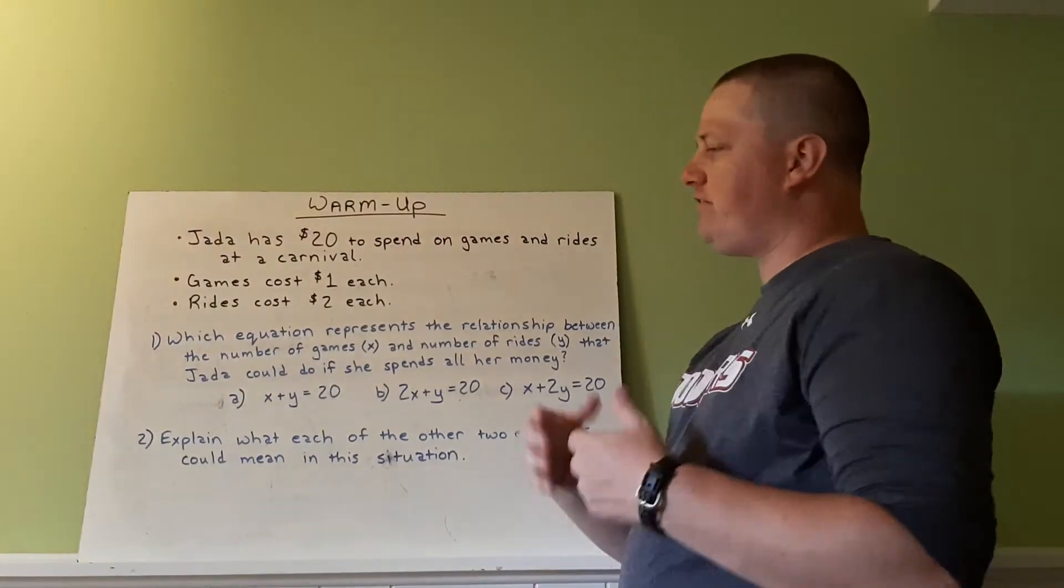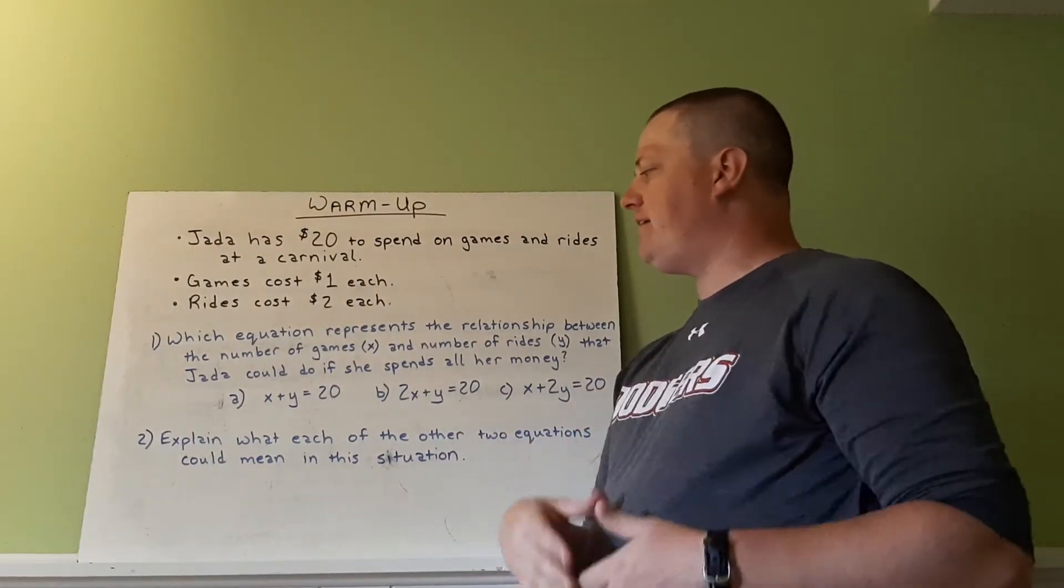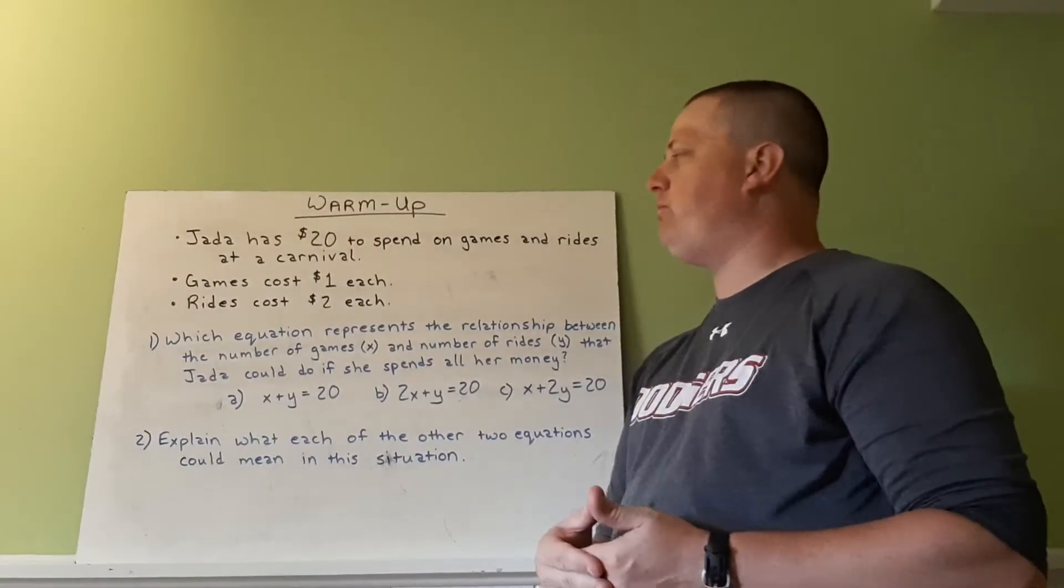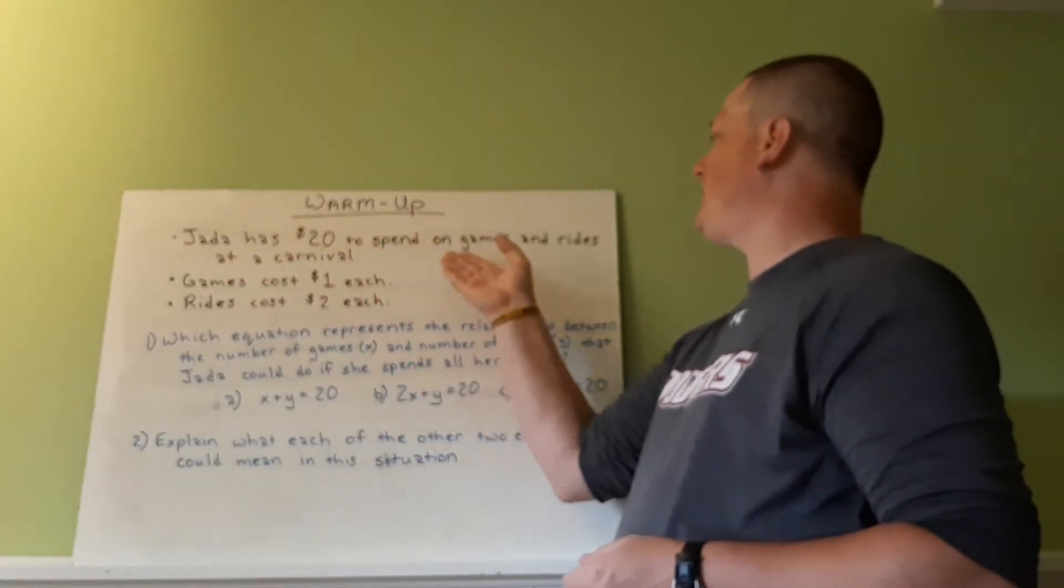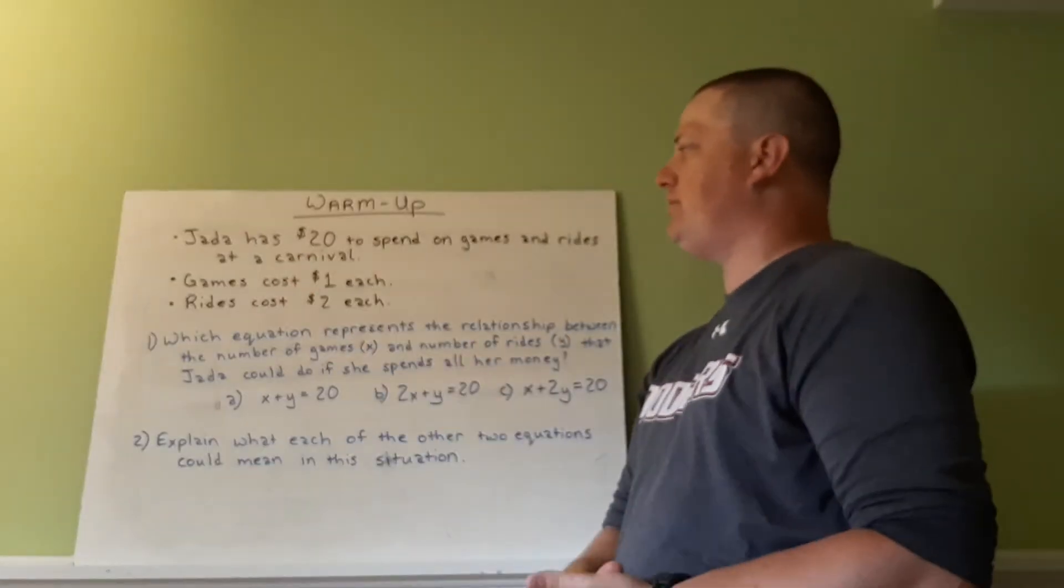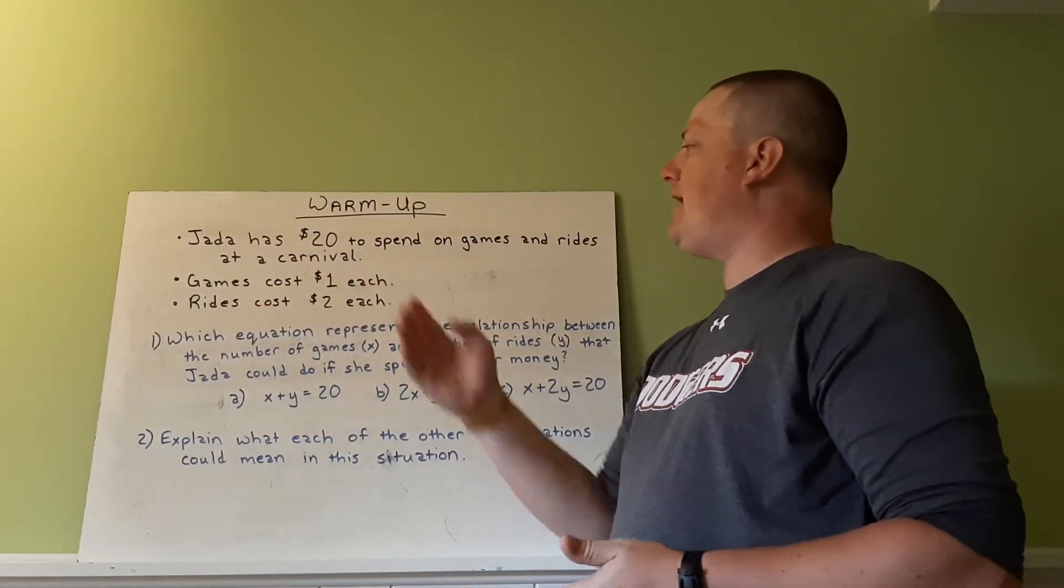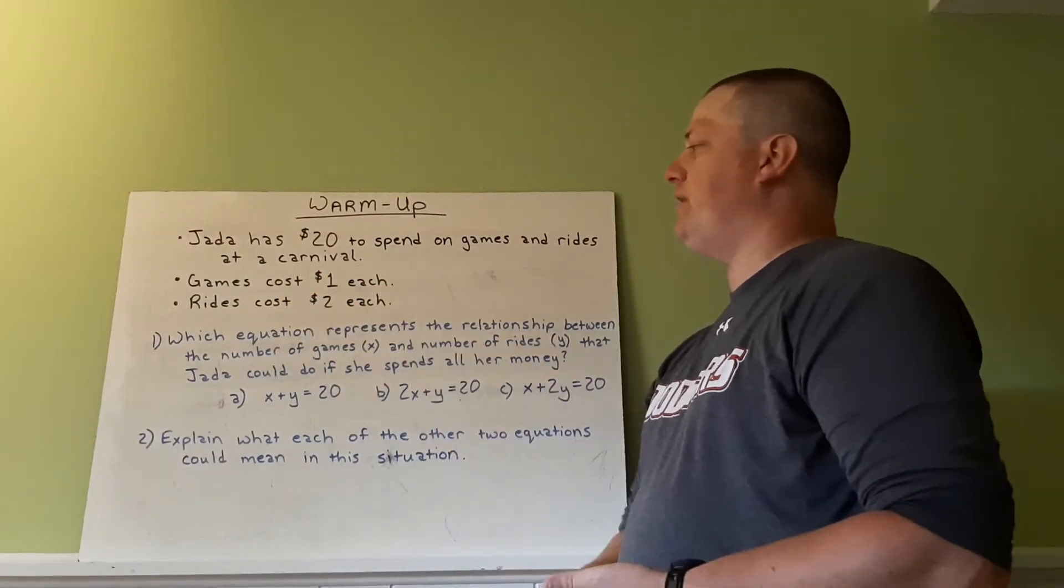All right, so here's the situation. You're going to try and figure this out and then bring your answers to class tomorrow and then that will start our discussion. So Jada has $20 to spend on games and rides at a carnival. The games cost $1 each, rides cost $2 each.